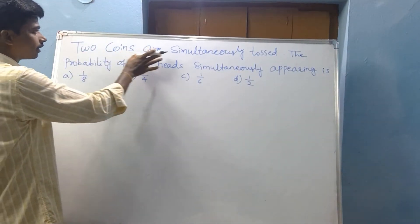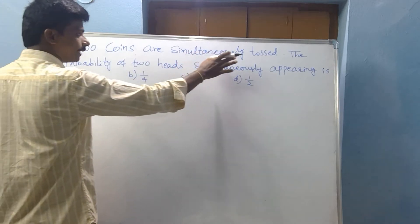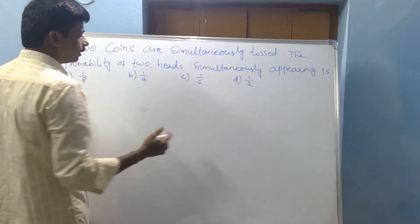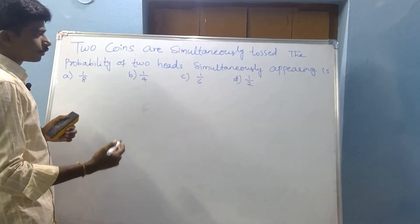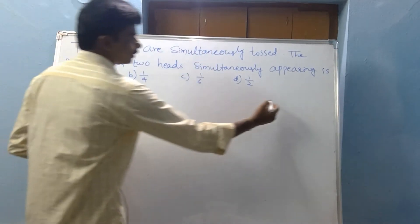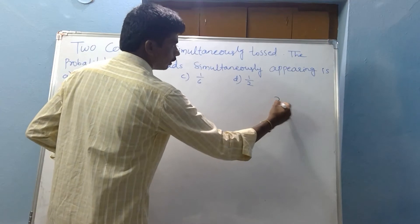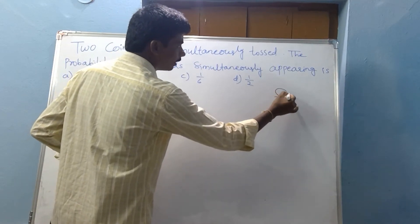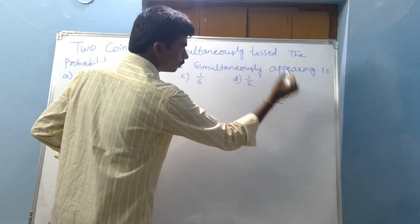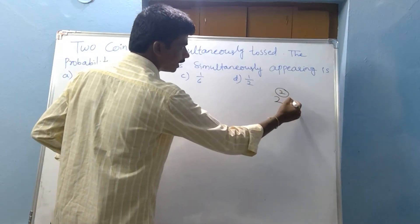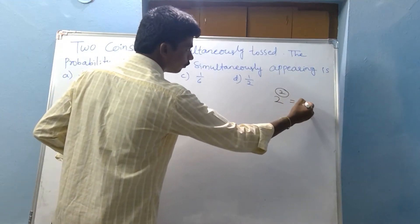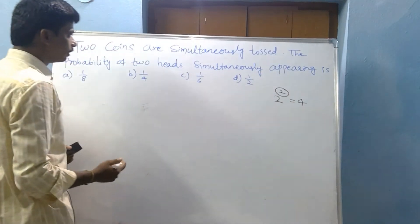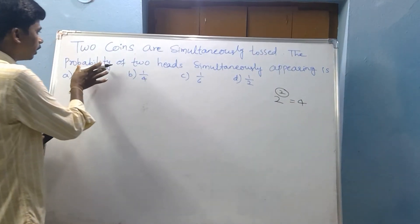Two coins are tossed simultaneously. Coin number is 2. Two squared equals 4 — so there are 4 outcomes here.